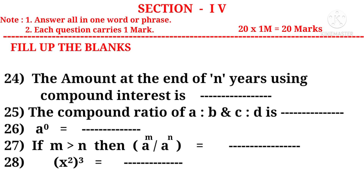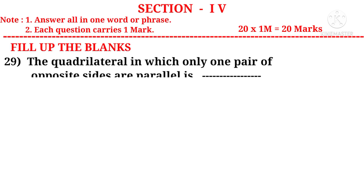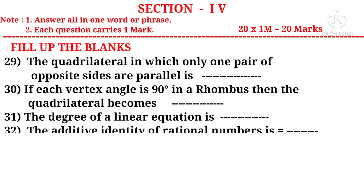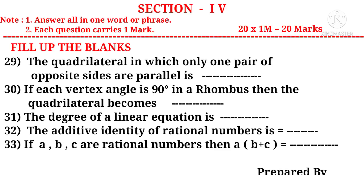Twenty-fifth question: the compound ratio of A to B and C to D is — dash — from Chapter 5. Twenty-sixth question: A power zero equals dash — from Chapter 4, Exponents and Powers. Twenty-seventh question: if M is greater than N, then A power M by A power N equals dash — from Chapter 4, Exponents and Powers. Twenty-eighth question: x power 2 whole power 3 equals dash — from Chapter 4, Exponents and Powers. Twenty-ninth question: the quadrilateral in which only one pair of opposite sides is parallel is — dash — from Chapter 3, Construction of Quadrilaterals.